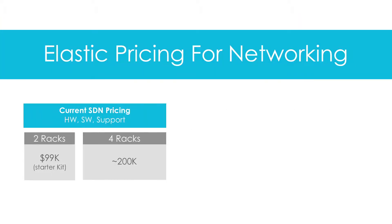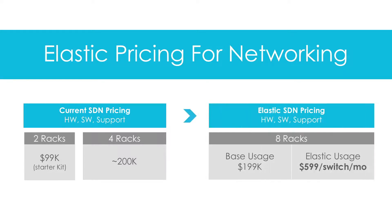For the same $200k, which would have provided a 4-rack system that you would own, Big Switch would instead provide up to 8 racks of capacity for the same $200k upfront price. This allows customers to leverage 50% of the capacity — up to 4 racks — at no additional cost.